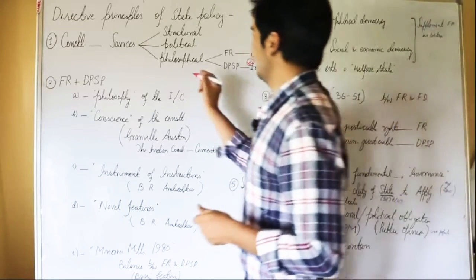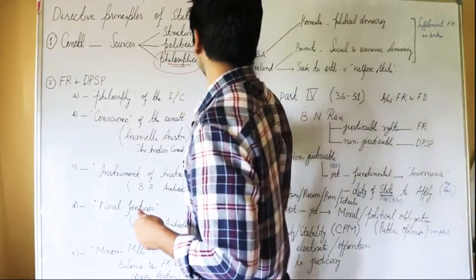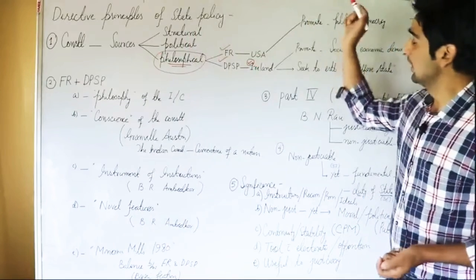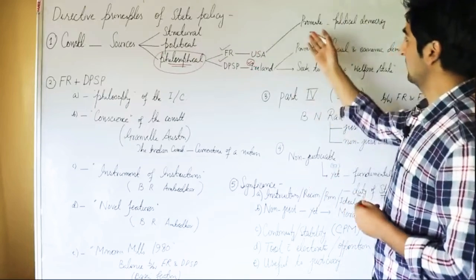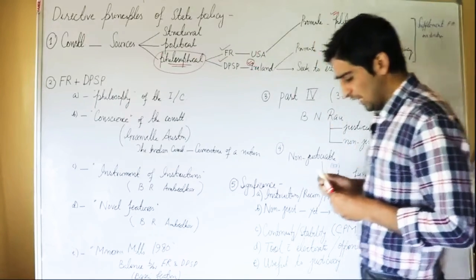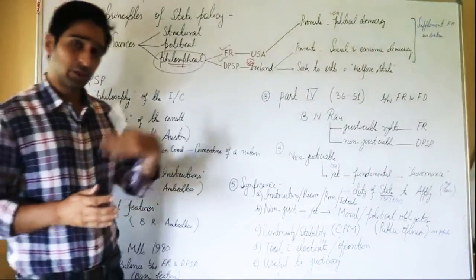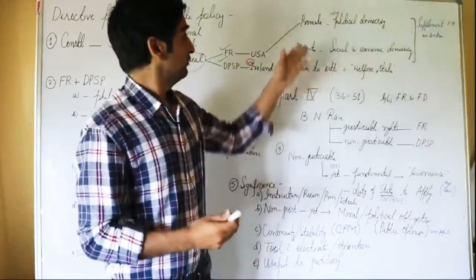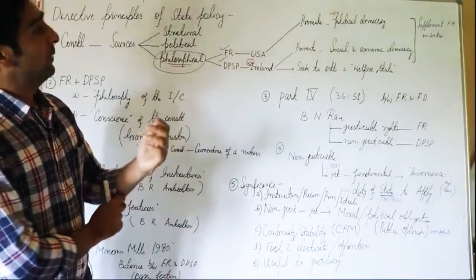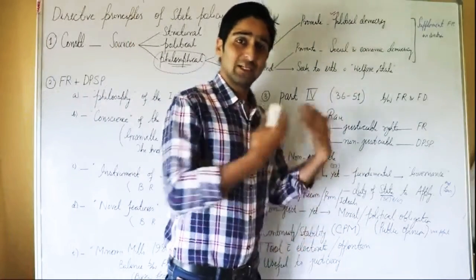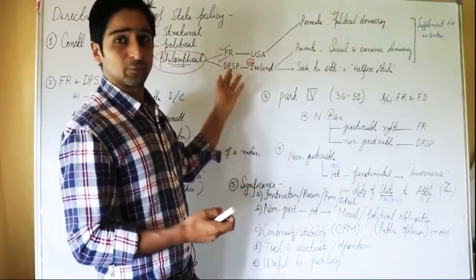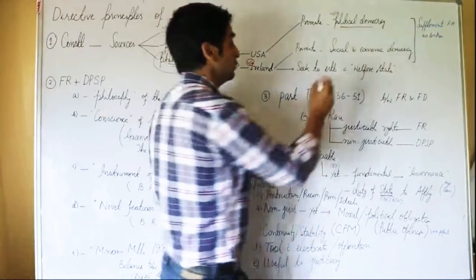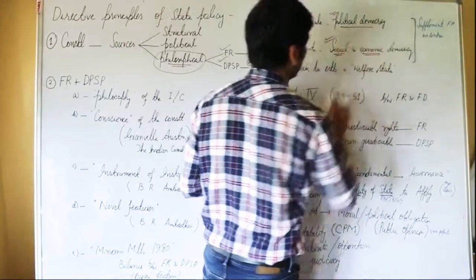The philosophical part of the Constitution of India is made up of the Fundamental Rights and the Directive Principles of State Policy. The Fundamental Rights promote the ideal of political democracy. Democracy has three aspects: political, social, and economic. The political aspect is achieved through the Fundamental Rights, while the social and economic democracy is promoted by the Directive Principles of State Policy. So the FRs promote political democracy, while the DPSPs promote social and economic democracy.